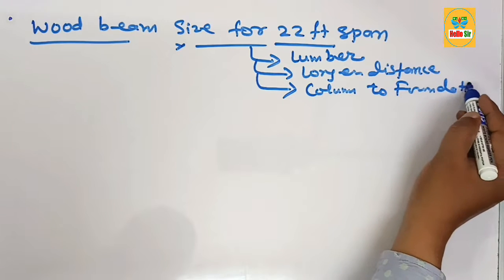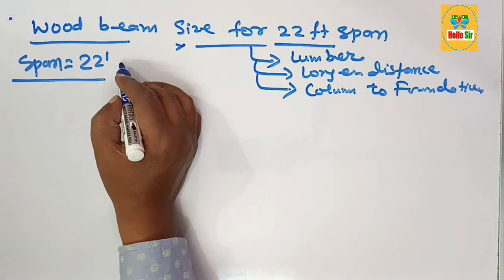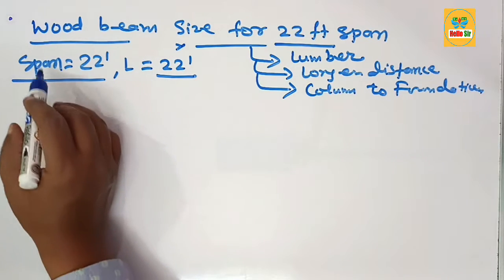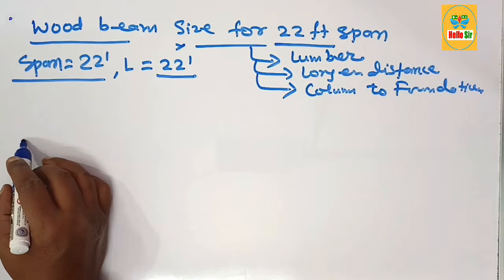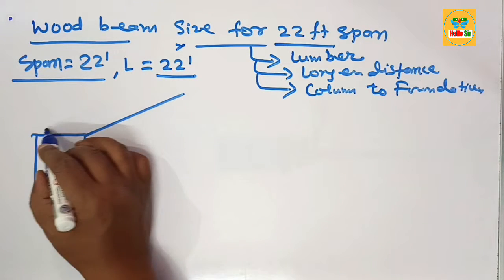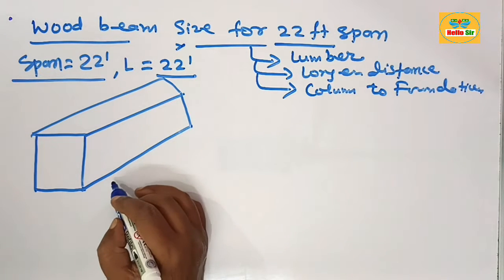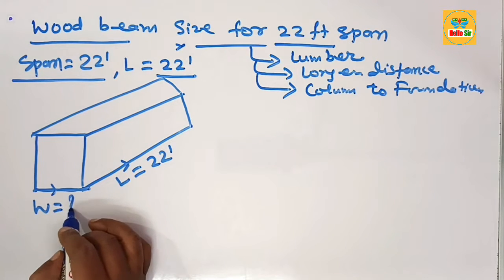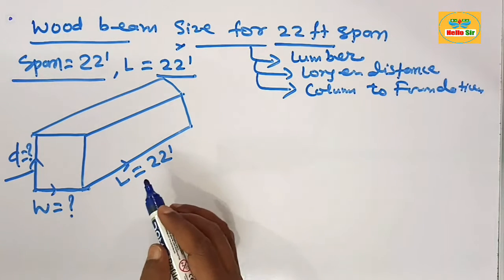The given span length of the wood beam is 22 feet, so the required length equals 22 feet. Sizing the wood beam means finding the depth and width section of the beam. Here we make a rough diagram to understand the width and depth sections — this diagram shows the three-dimensional structure of the wood beam. The length is 22 feet, and we need to find the width and depth sections.